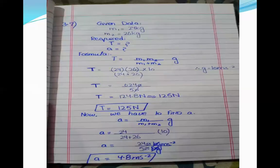The next numerical is 3.7. The statement is: two masses, 26 kg and 24 kg, are attached to the ends of a string over a frictionless pulley. M1 equals 24 kg and m2 equals 26 kg. The 26 kg mass is lying on a smooth horizontal table and the 24 kg mass is moving vertically downward. Find the tension in the string.